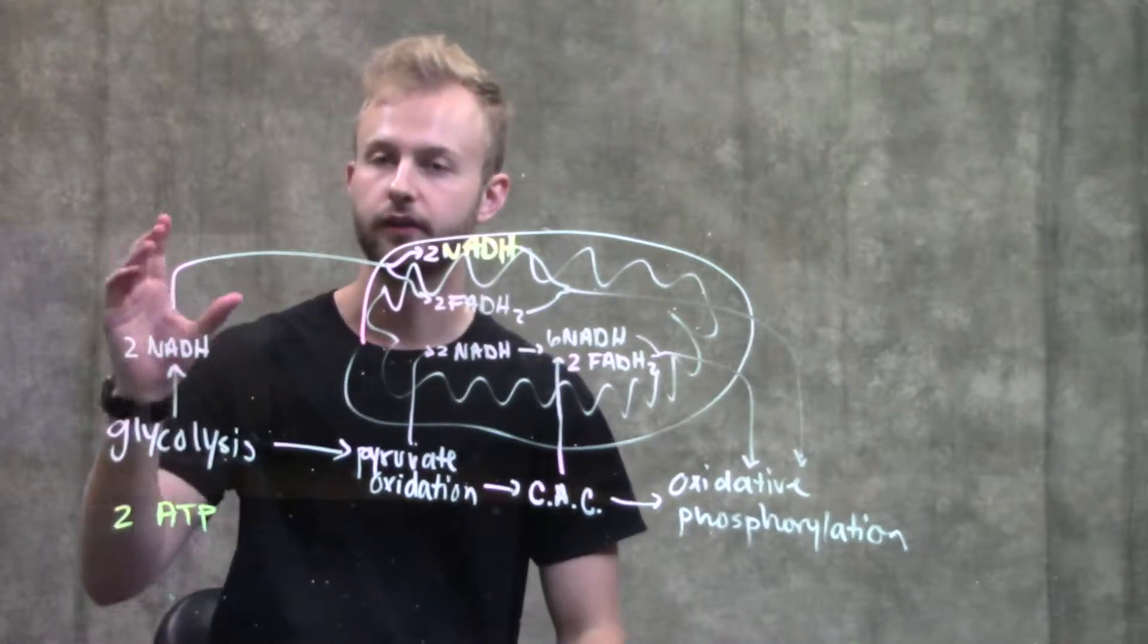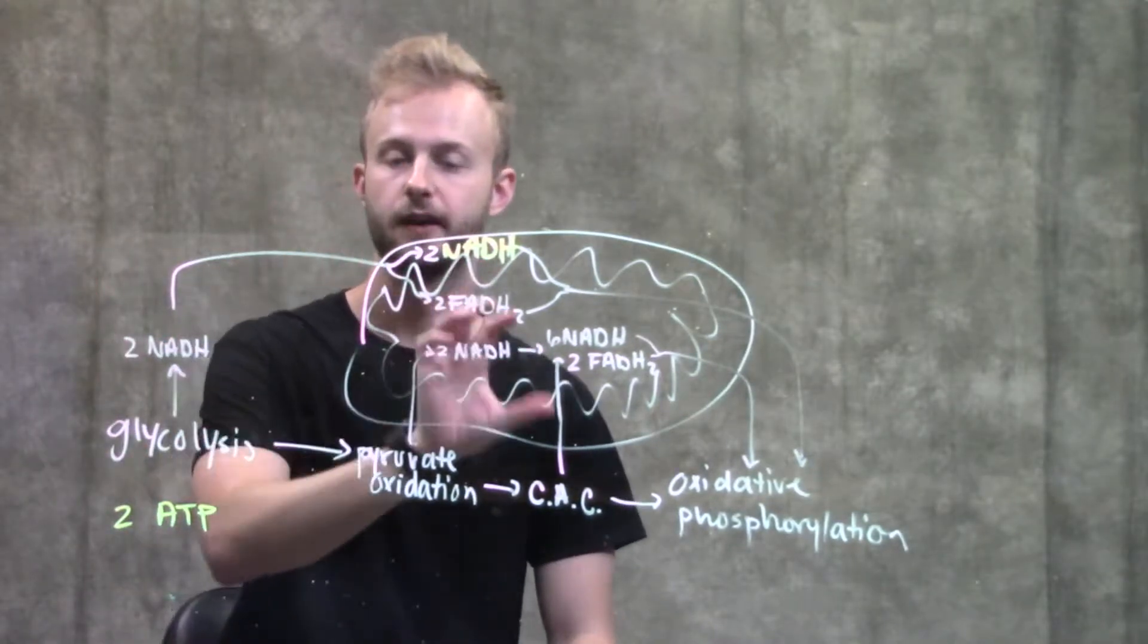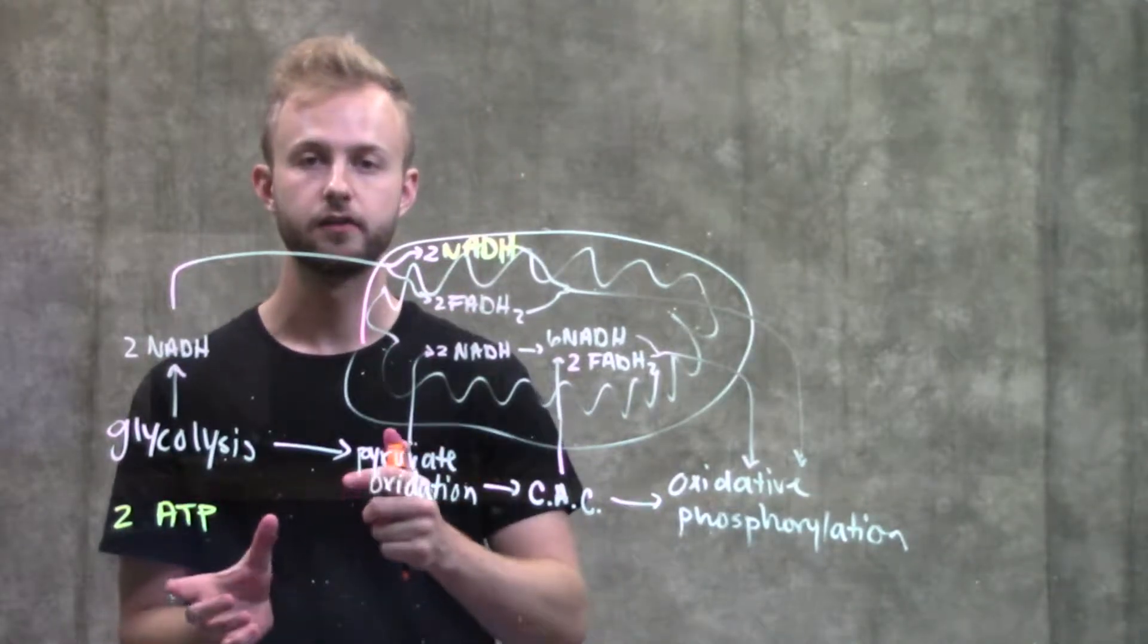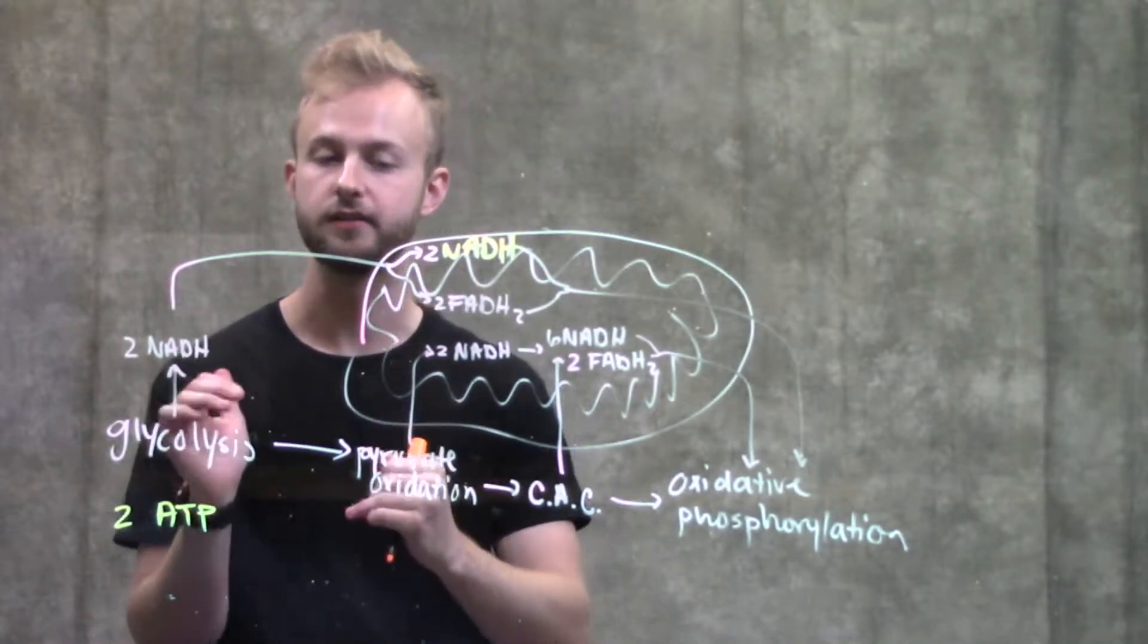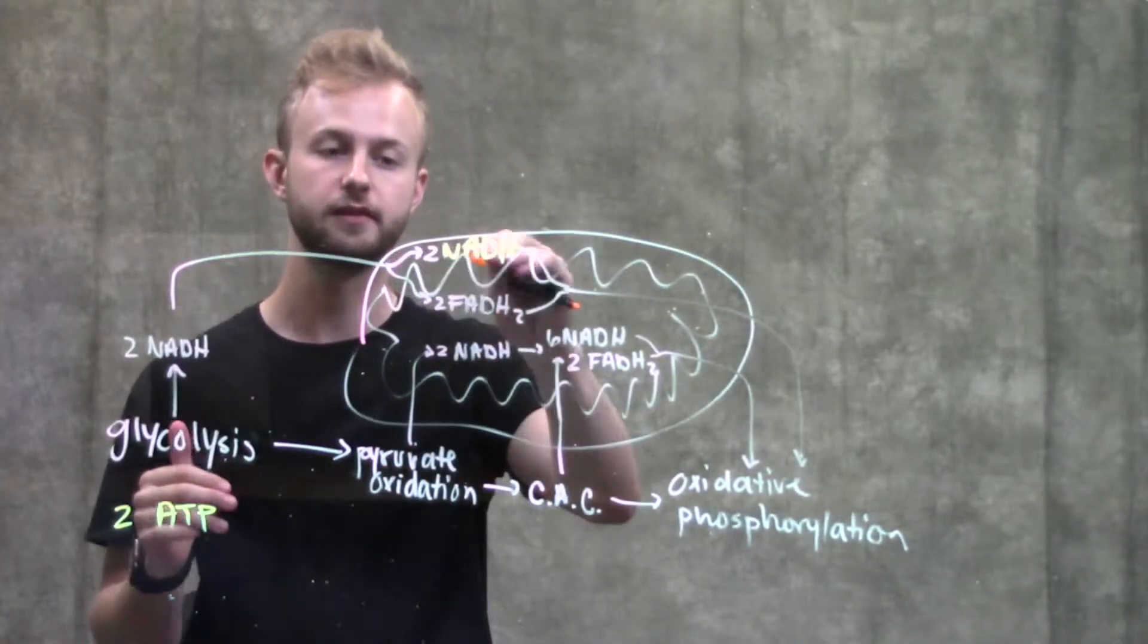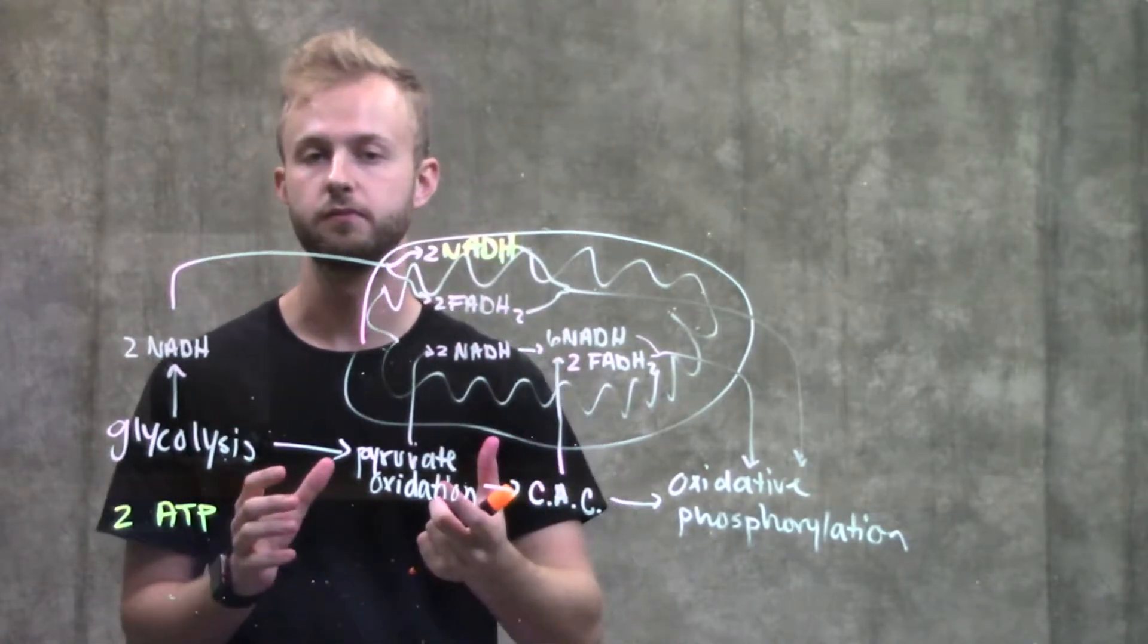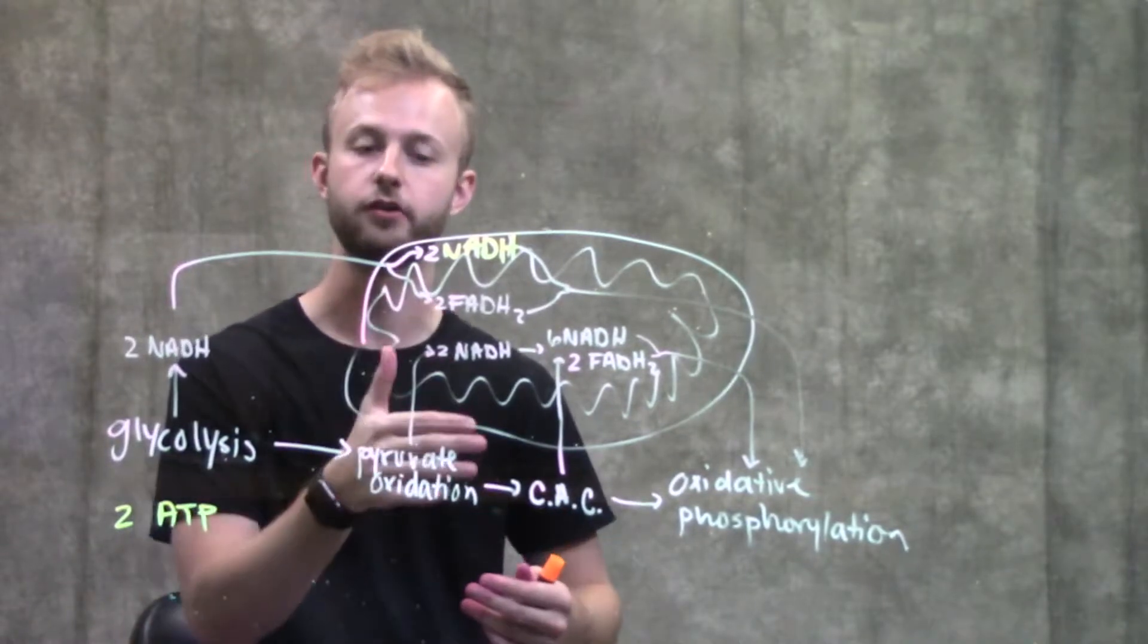These NADHs will then get transported from the cytoplasm into the mitochondria through one of two electron shuttles, and that's going to influence how much those NADHs are worth. That's why we have two NADH or two FADH2, which would be less productive and produce less ATP than a molecule of NADH.